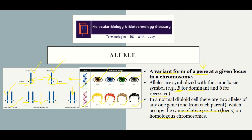Dominant and recessive simply means which one outdoes the other when it comes to expression. When you have a dominant allele, it will be expressed over the recessive. And that means if you have two recessive alleles, then they are the ones that are going to be expressed.